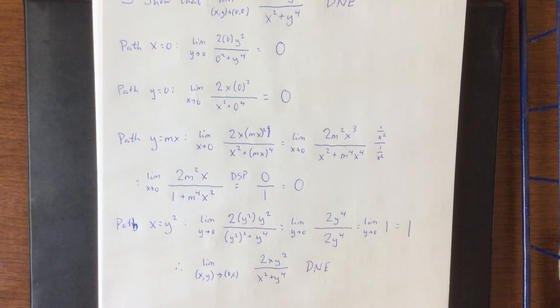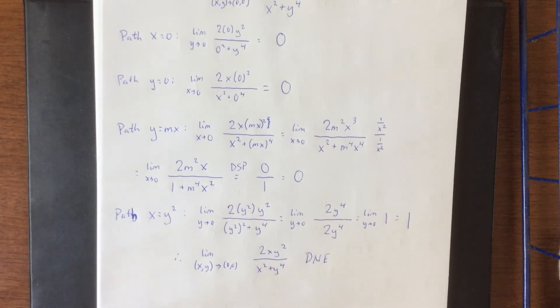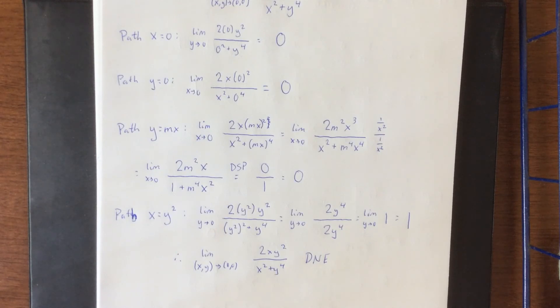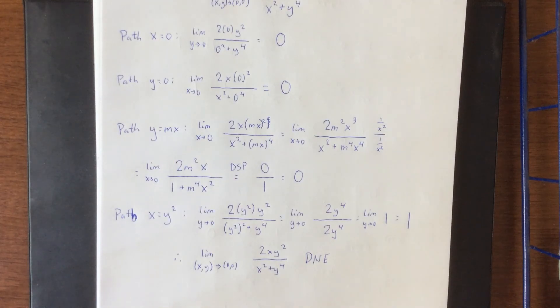Paths cannot be used to show that a limit does exist. In the next video, we'll investigate ways to show that a limit does exist.